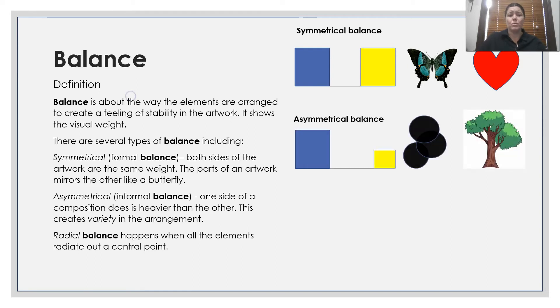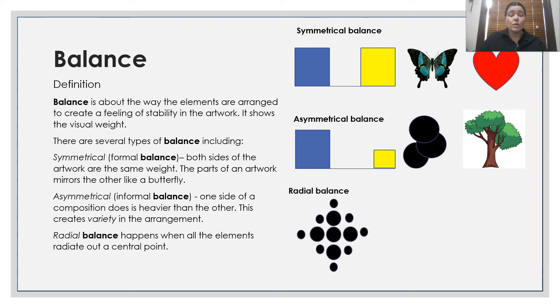Asymmetrical, which is informal balance, is where one side of the composition is heavier than the other — this creates variety in the arrangement. Radial balance happens when all the elements radiate out of the centre.